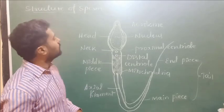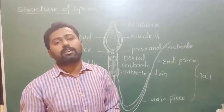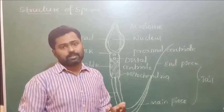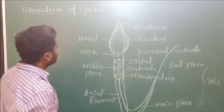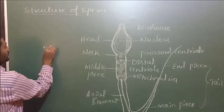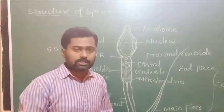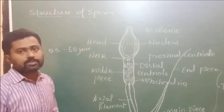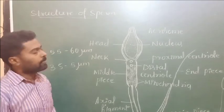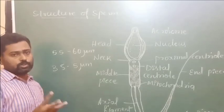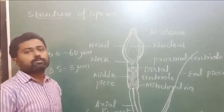The next concept is the structure of the human sperm, or the ultrastructure of the sperm. The sperm is a specialized sex cell — a gamete, the male gamete, which is produced inside the testicles. The sperm has the shape of a tadpole or dart-like structure, measuring about 55 to 60 micrometers in length and about 3.5 to 5 micrometers in diameter. The sperm is divisible into three major portions: the head, the middle piece, and the tail.